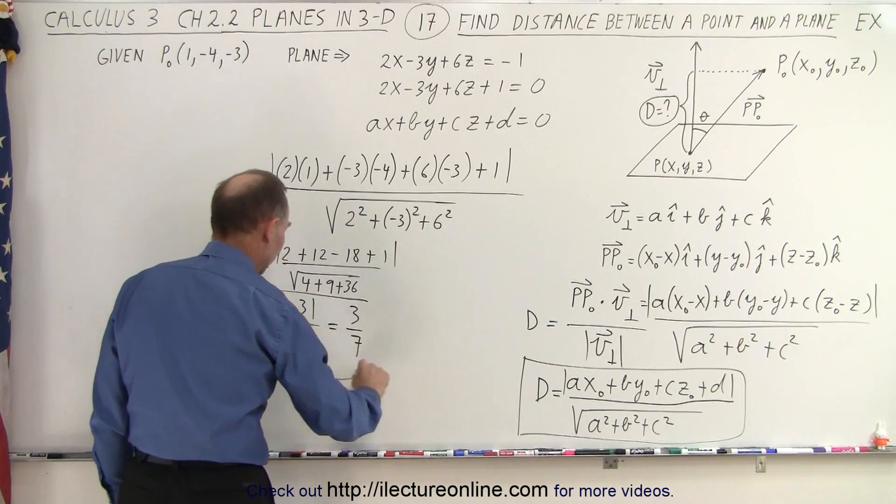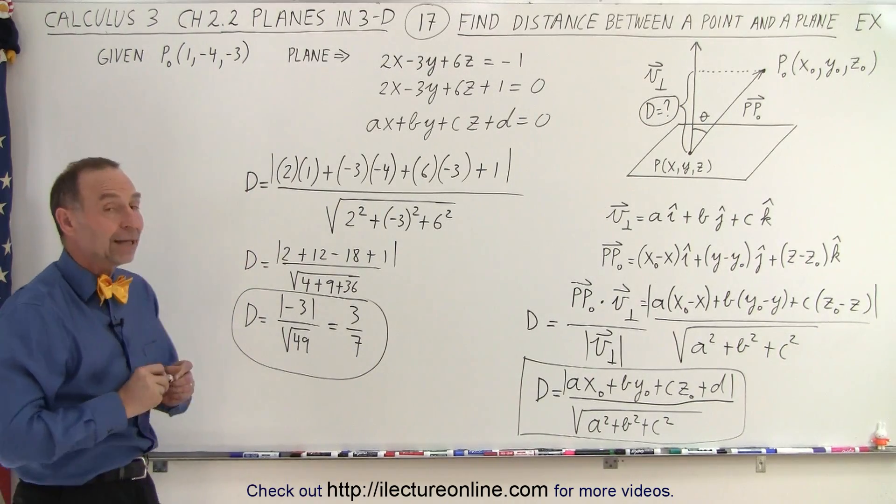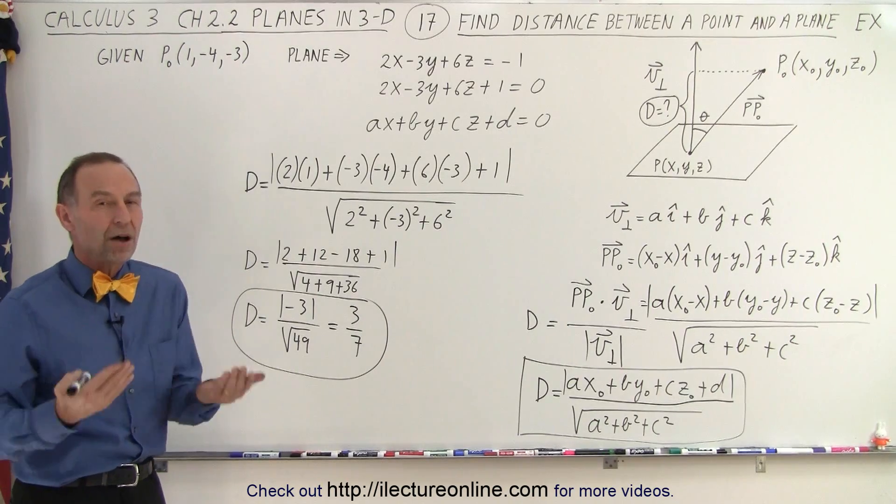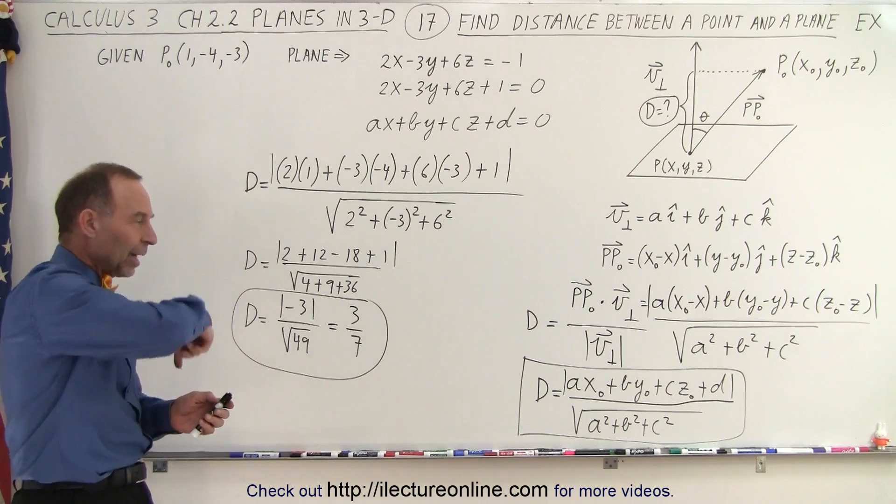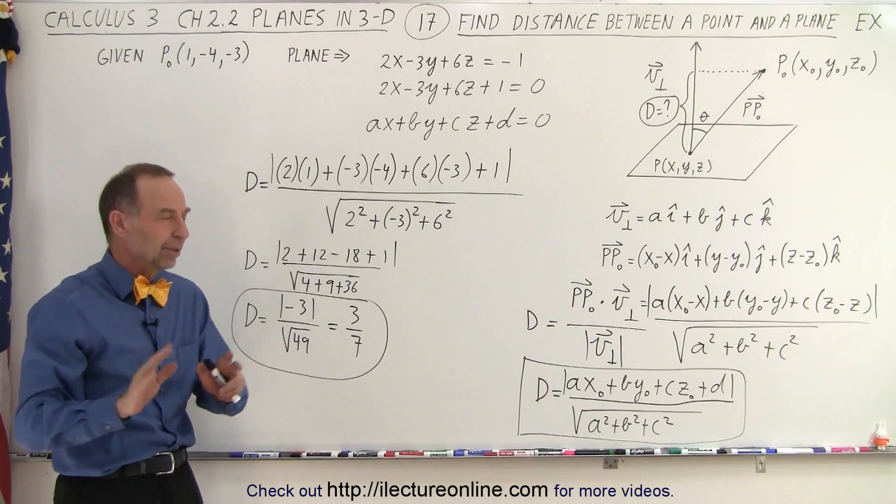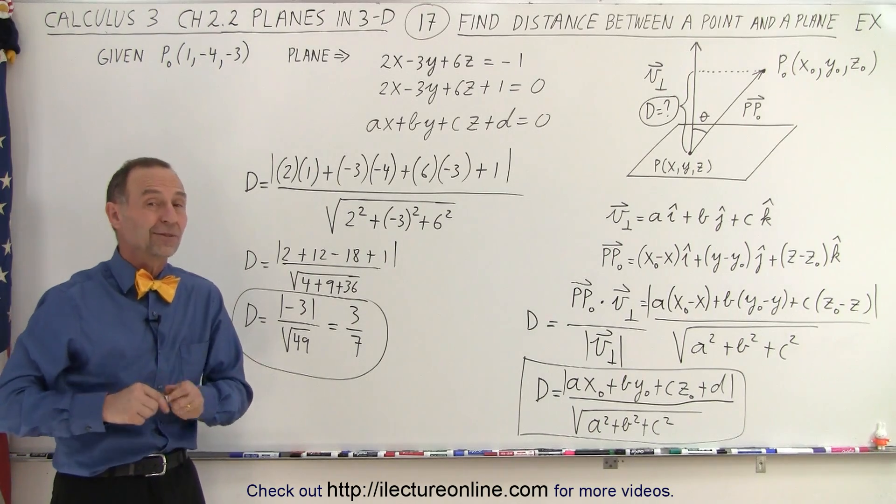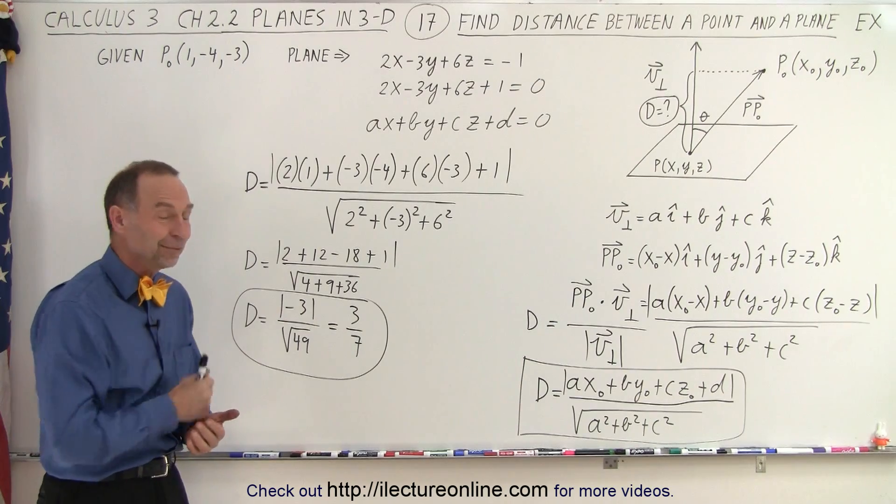And this here is the distance between that point that was given and the plane. Again, why did I put absolute value signs on that? Because we want a positive distance. It's simply, from a vector perspective, if you're pointing opposite direction, you get a negative value. But here we don't care. We simply care about the magnitude of that distance. And so we put absolute value signs to make sure we get the positive answer. And that is how it's done.